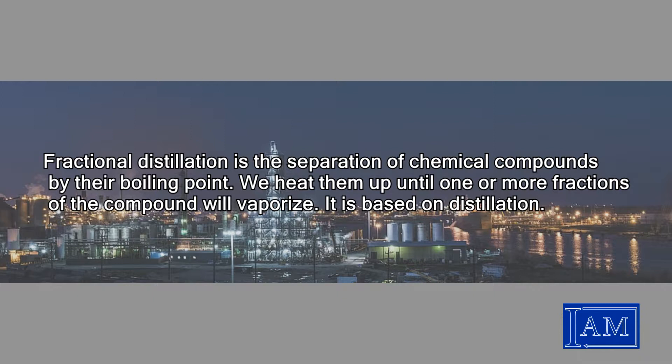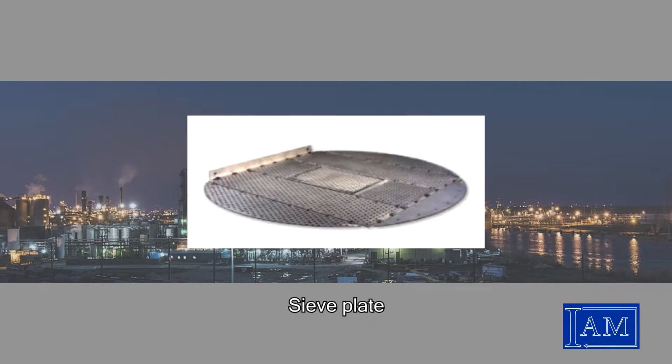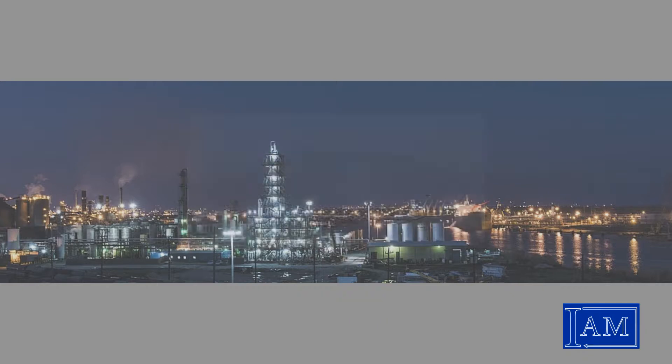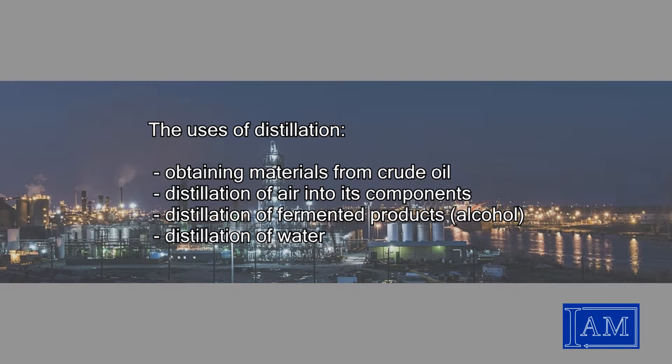On the following picture you can see a sieve plate. These can be found in the distillation column. We use distillation to obtain materials from crude oil, to separate air into its components, or to distill fermented products to produce alcohol. One of the most common uses is to clean water by distillation.